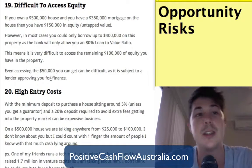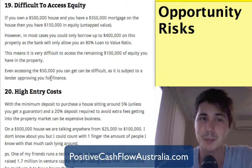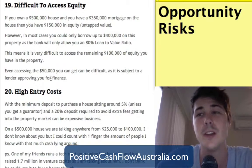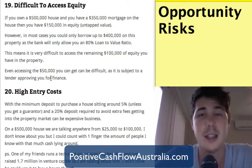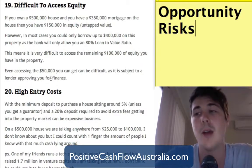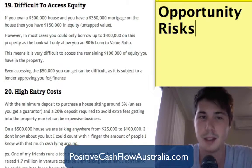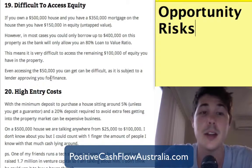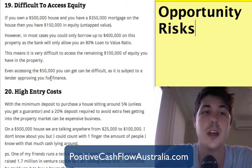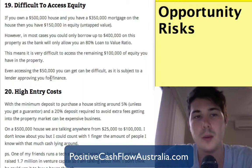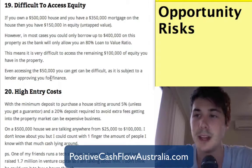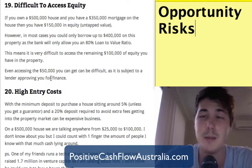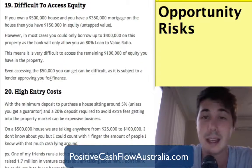That leads us to number nineteen: it's difficult to access equity. If you own a $500,000 house with a $350,000 mortgage, you effectively have $150,000 in equity. However, in most cases you can only borrow up to 80% of the property's value — around $400,000 — to avoid lender's mortgage insurance. So even though you can probably access $50,000, there's $100,000 you can't tap without selling the property.